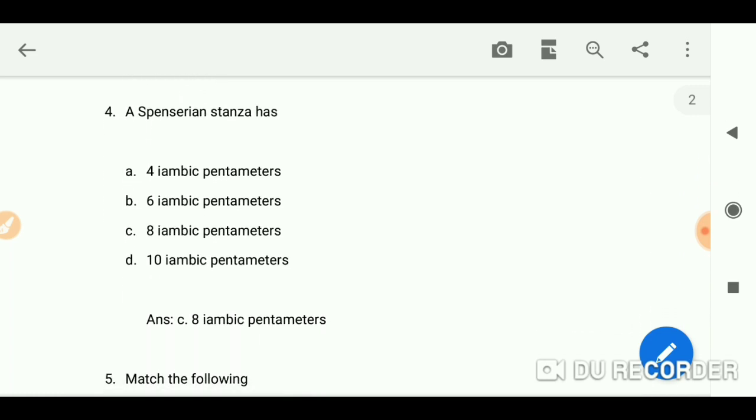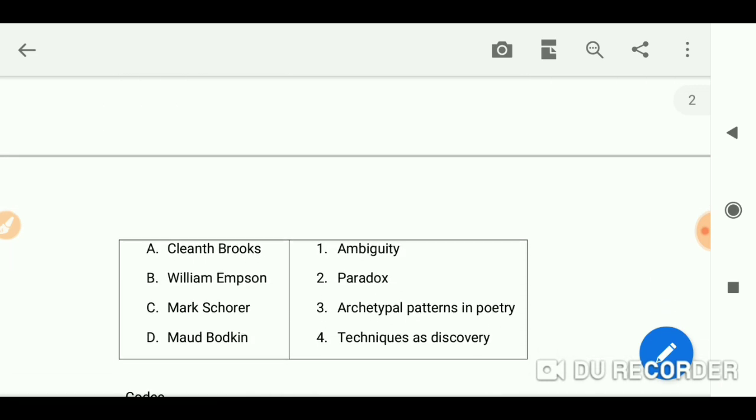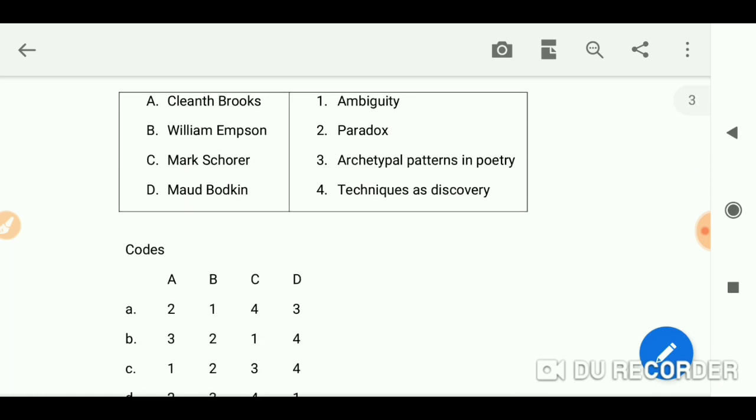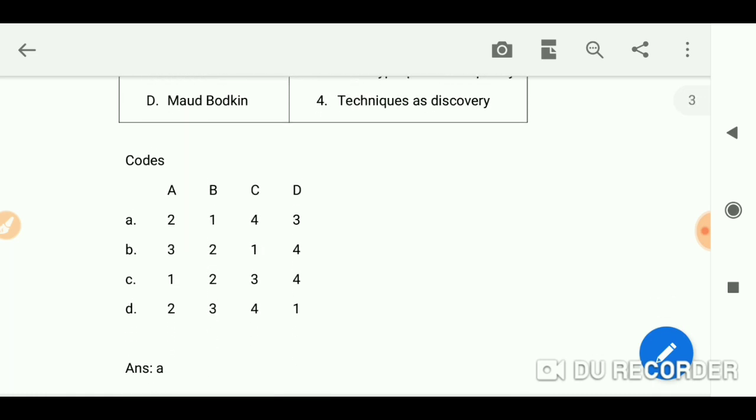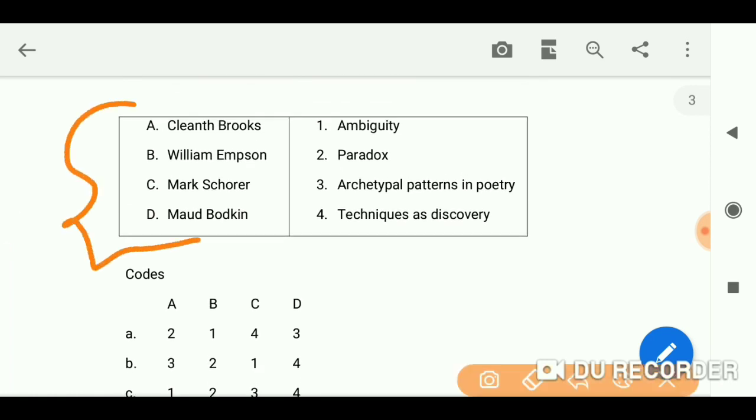Match the following list. We have these writers here: Cleanth Brooks, William Empson, Mark Schorer, and Maud Bodkin. Here is your answer, you can see option A. And if you want to see all these works, you can check out my videos on literary terms and you will find all the shortcuts for these.